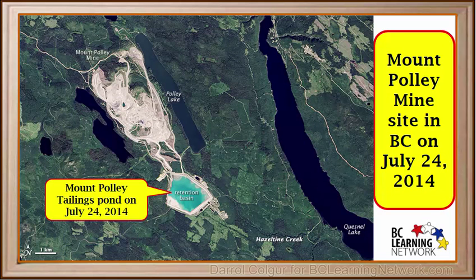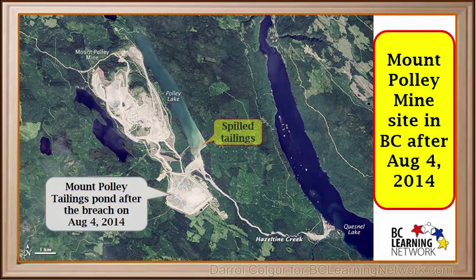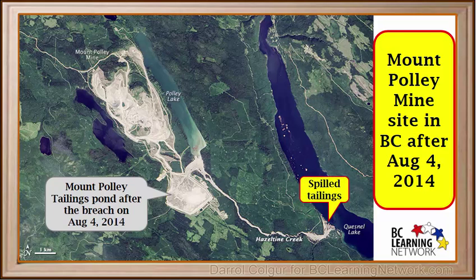Mount Polley is a copper and gold mine located near Quesnel in the central interior region of BC. Here is an aerial photo of the mine site and tailings pond on July 24, 2014. The dam is shown here. On August 4, 2014, the dam broke and released millions of cubic meters of water and slurry into Polley Lake and Quesnel Lake. Tailings are known to contain toxic elements, so clearly a large amount of toxins were released to the environment as a result of this spill.